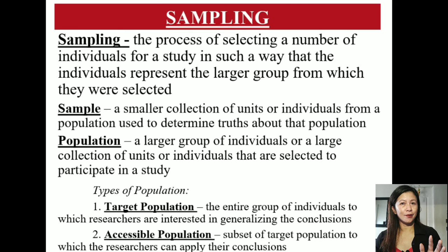The second subheading of your Chapter 3 methodology is sampling. Sampling is done to select participants who will take part in your study — those from whom you collect numerical data for data analysis. Sampling refers to the process of selecting individuals for a study such that they represent the larger group from which they were selected. A sample is a smaller group from a population, which is the larger group.